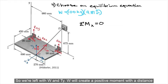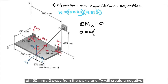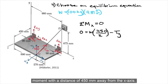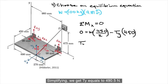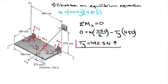So we're left with W and Ty. W will create a positive moment with a distance of 450 mm divided by 2 away from the x-axis, and Ty will create a negative moment with a distance of 450 mm away from the x-axis. Simplifying, we get Ty equals 490.5 newtons.